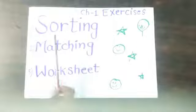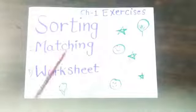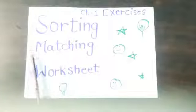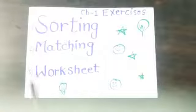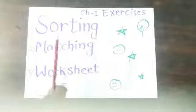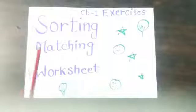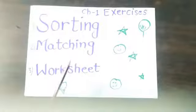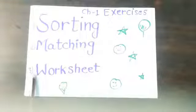There are three sub-parts of chapter 1's exercise. First is sorting, second matching, third worksheet. In sorting, we find out the separate thing or the odd one thing from the given pictures or given things. In matching, we do the match of similar things. In worksheet, we will solve the given work.